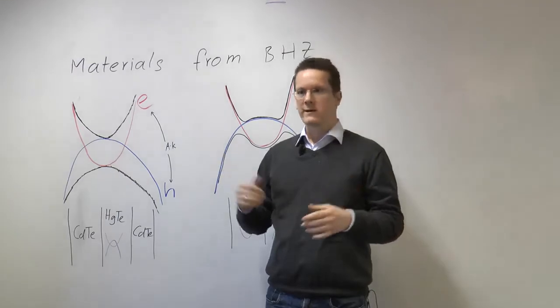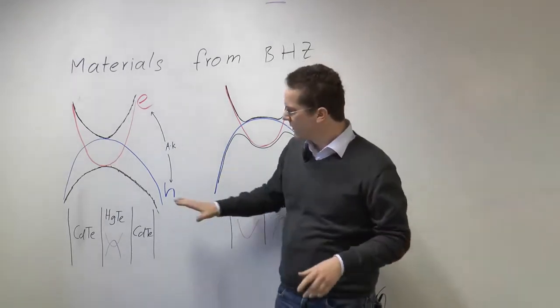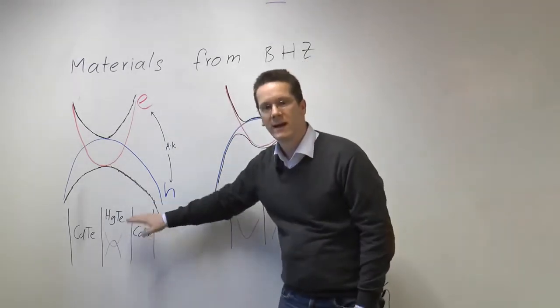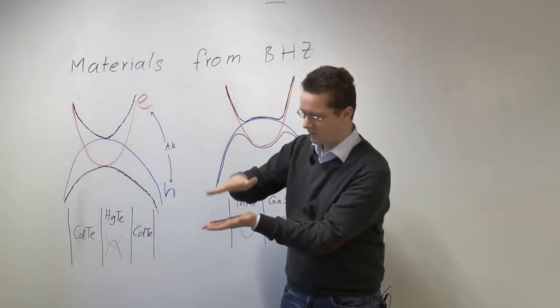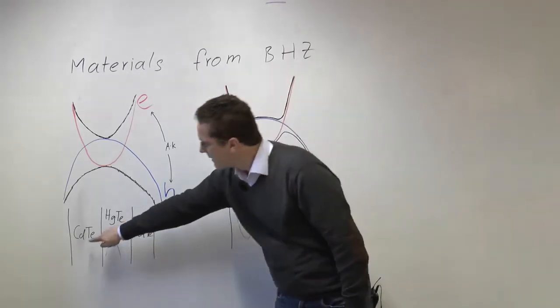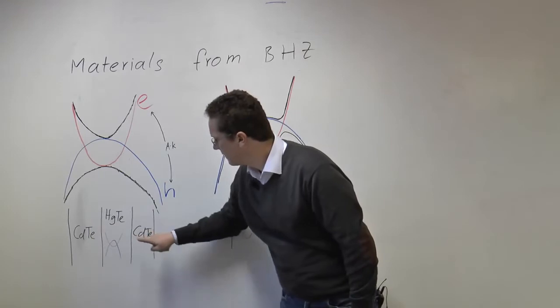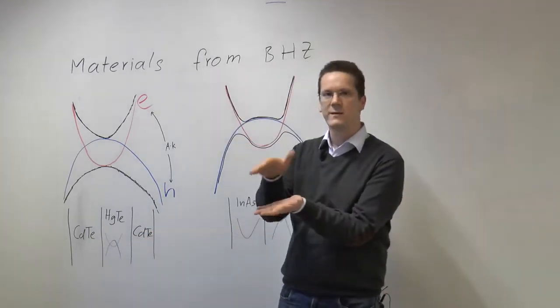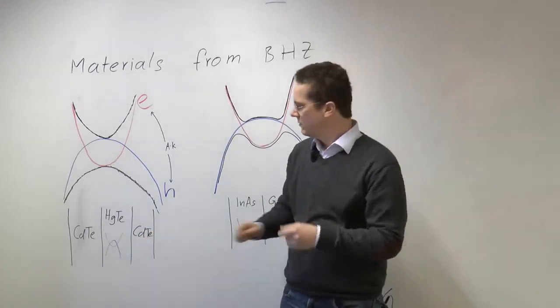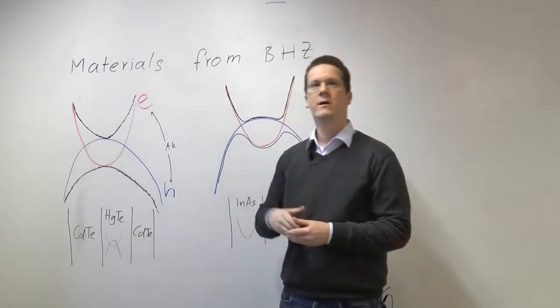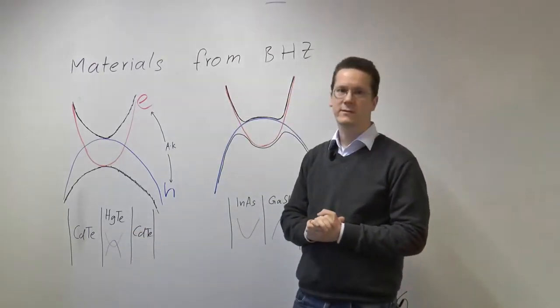So one way to get rid of these additional bands is instead of having just mercury telluride, you actually make a stack, a heterostructure out of cadmium telluride, mercury telluride and cadmium telluride again. And with this confinement you get rid of all unwanted bands and you're just left with the electrons and holes which form the topological band structure.